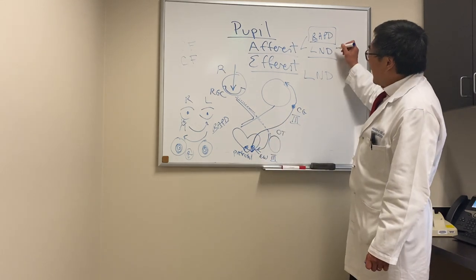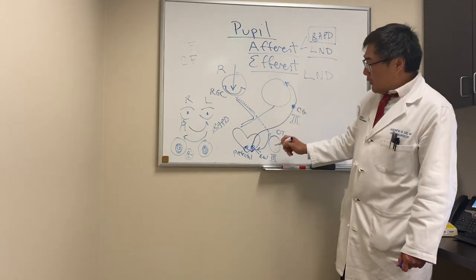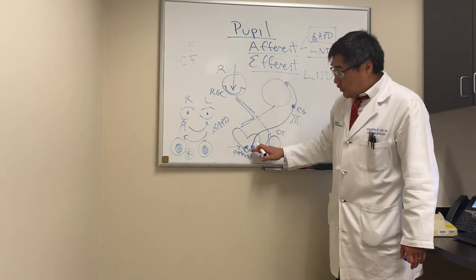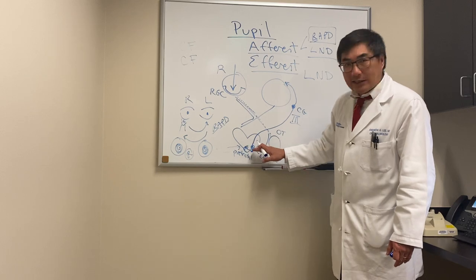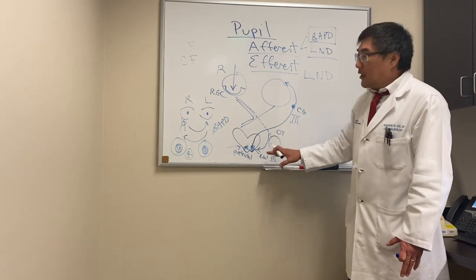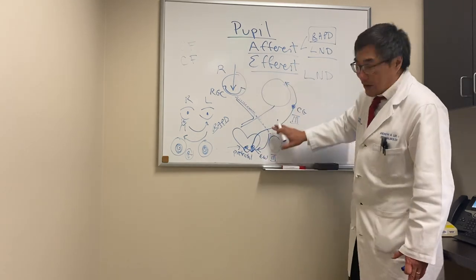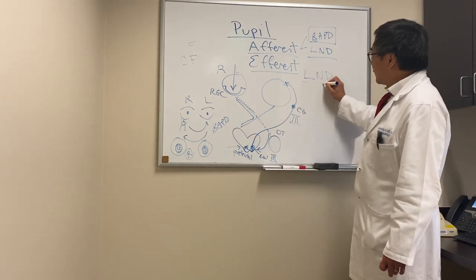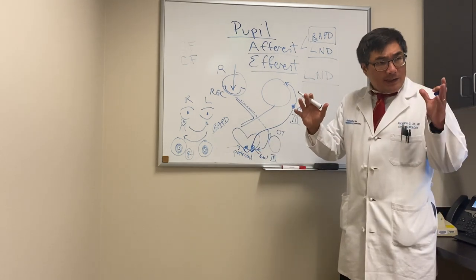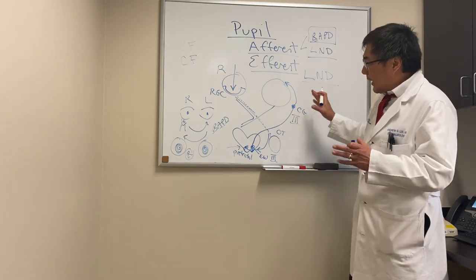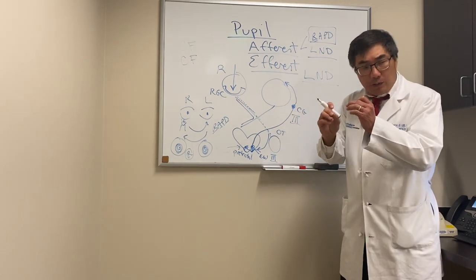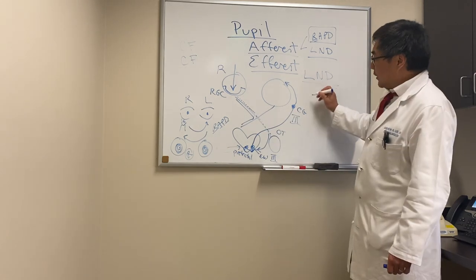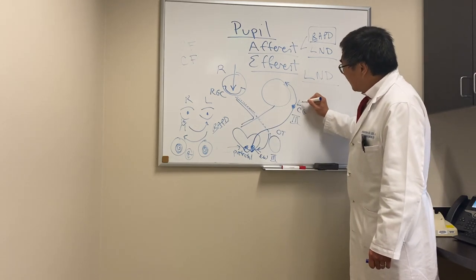The most prominent example of efferent light-near dissociation is the Argyll Robertson pupil. In neurosyphilis, the pretectal nuclei area is affected, causing the light reaction to be impaired while the near reaction remains intact. The Argyll Robertson pupil accommodates but does not react to light. It is bilateral, small, and irregular — going from tiny to pinpoint — and demonstrates light-near dissociation.